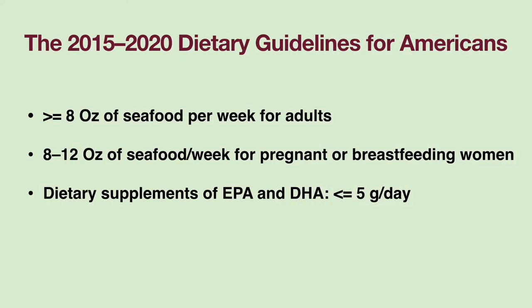Because seafoods contain relatively high amounts of EPA and DHA, the 2015–2020 Dietary Guidelines for Americans recommend the intake of at least 8 ounces of seafood per week for adults. Women who are pregnant or breastfeeding should consume 8 to 12 ounces of seafood with higher EPA and DHA content per week.